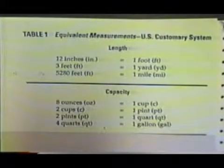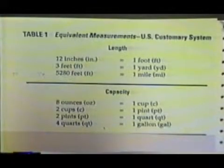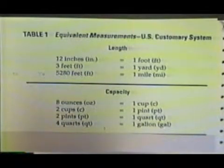In working with the denominate numbers, we will need to know the different conversions to change back and forth from one unit to another. The conversions that we'll be working with for length are 12 inches equal to 1 foot, 3 feet equal to 1 yard, and 5,280 feet equals to 1 mile.